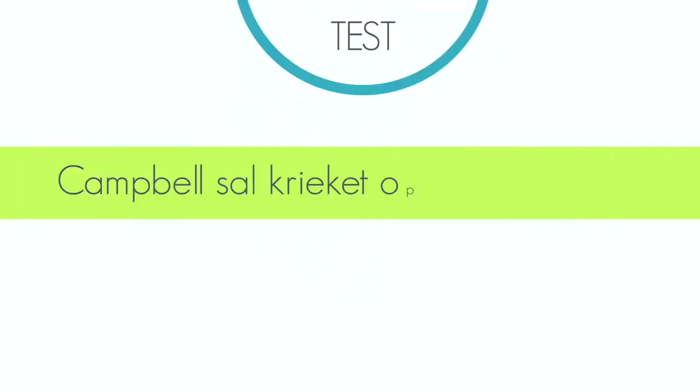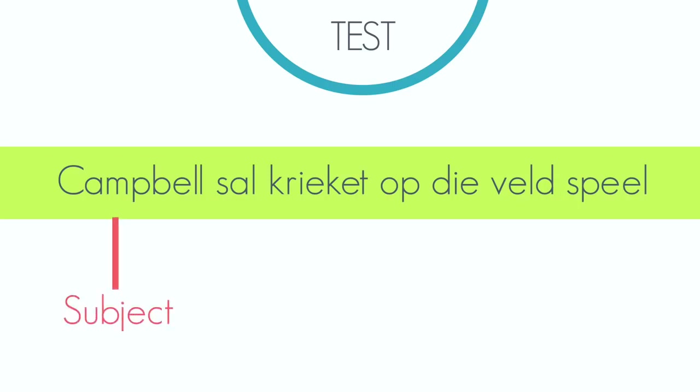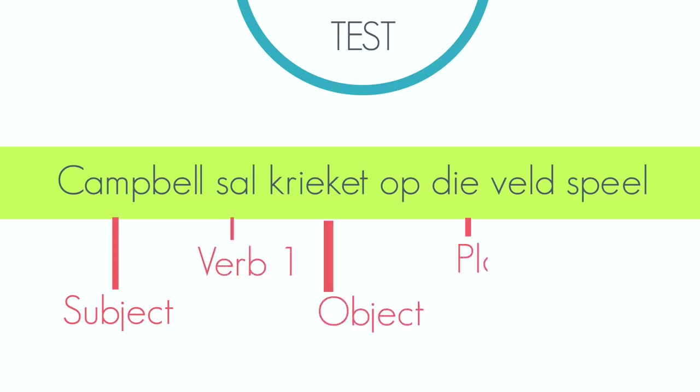Let me give you a sentence so we can identify the different sections of Stompy. It is very important to note that not every sentence has to have every part of Stompy. We can now see that 'Campbell' is the subject, 'sal' is Verb 1, 'krieket' is the object, 'op die veld' is the place, and 'speel' is Verb 2.